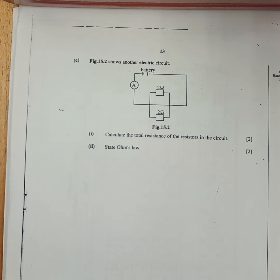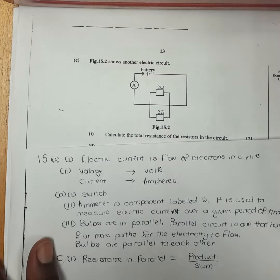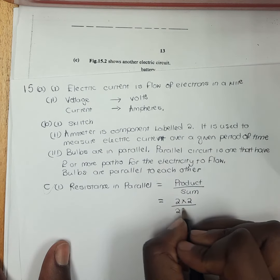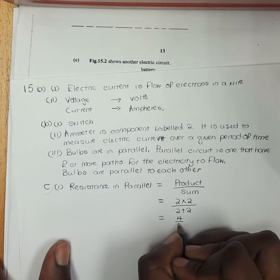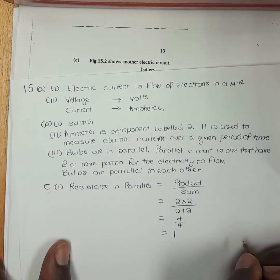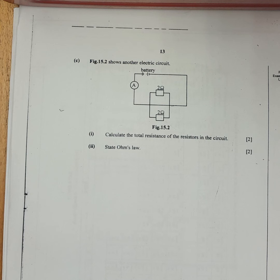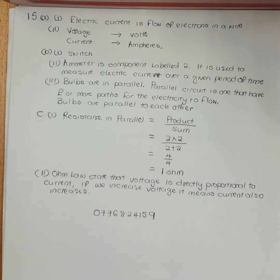Part c: Fig 15.2 shows another electric circuit — we are to calculate the total resistance of resistors connected in parallel using the product-over-sum formula: (2 × 2) / (2 + 2) = 4 / 4 = 1 ohm. Finally, state Ohm's law: voltage is directly proportional to current, meaning that when voltage increases, current also increases. This was the complete solution of number 15 from June 2024.